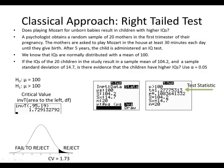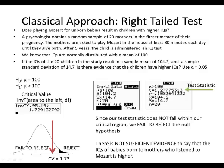Our test statistic T equals 1.28. Placing that on the number line, it is not within the rejection region — not in the shaded area — so we fail to reject. There is insufficient evidence to say that the IQs of babies born to mothers who listened to Mozart are higher. We're always comparing our statements with the alternative hypothesis.